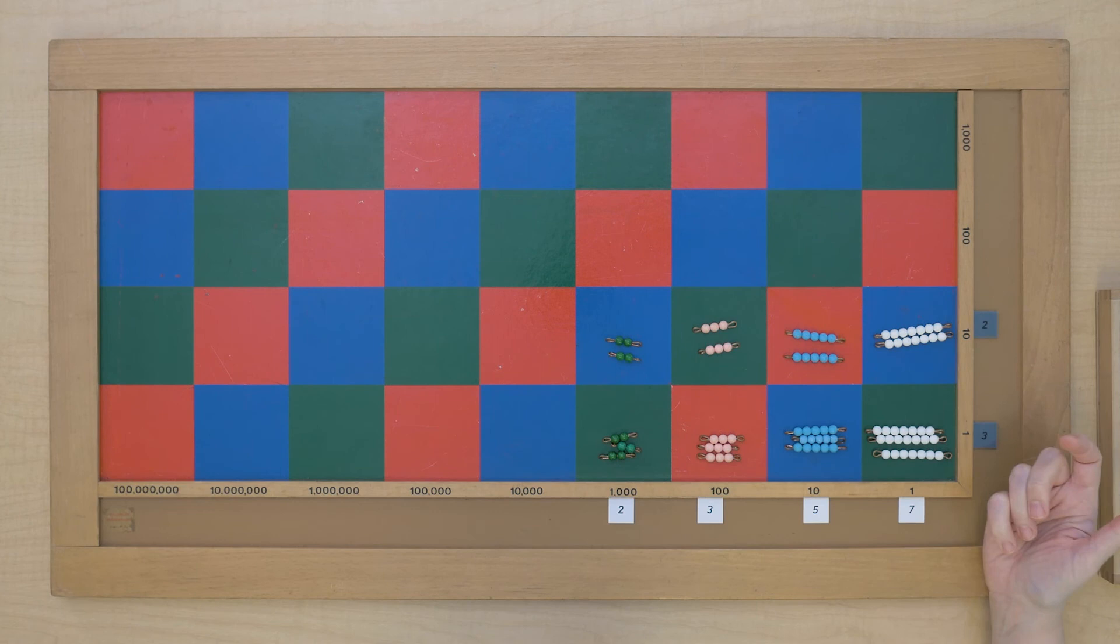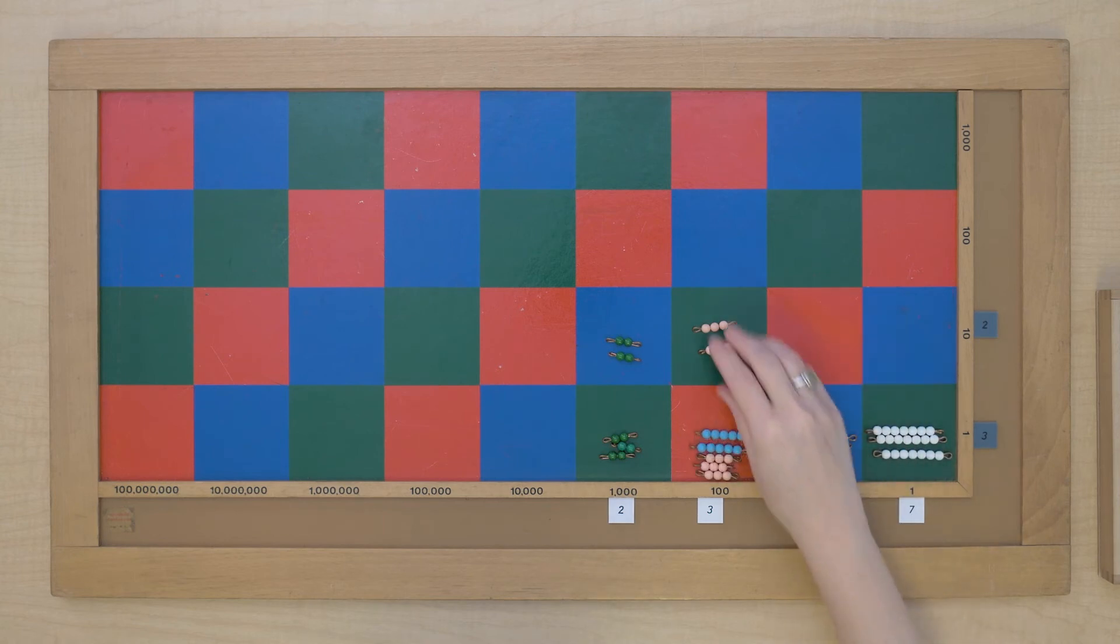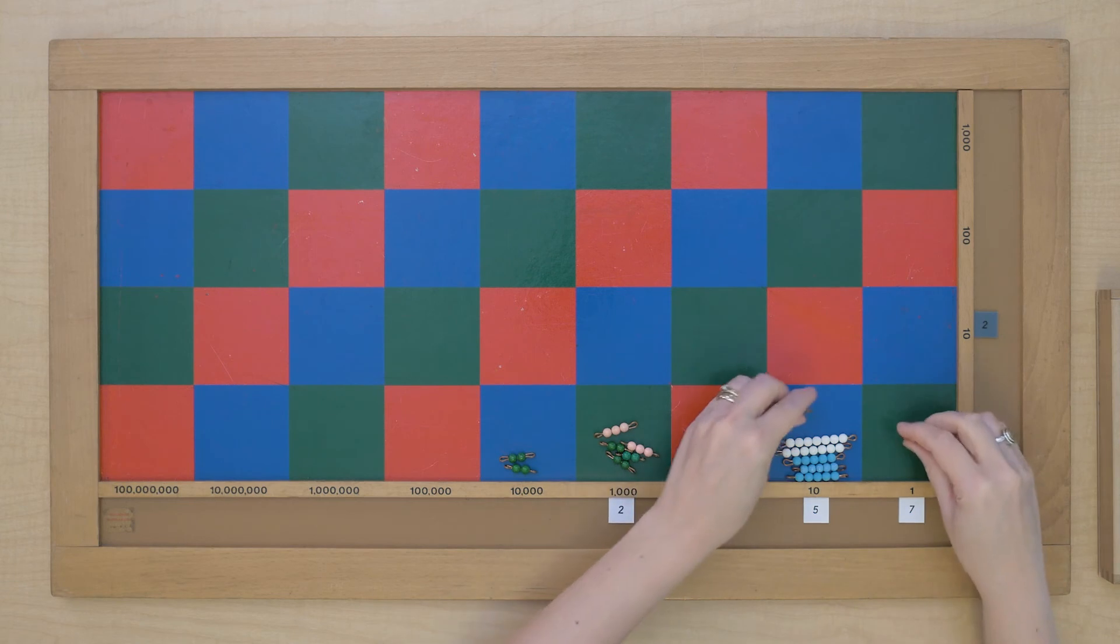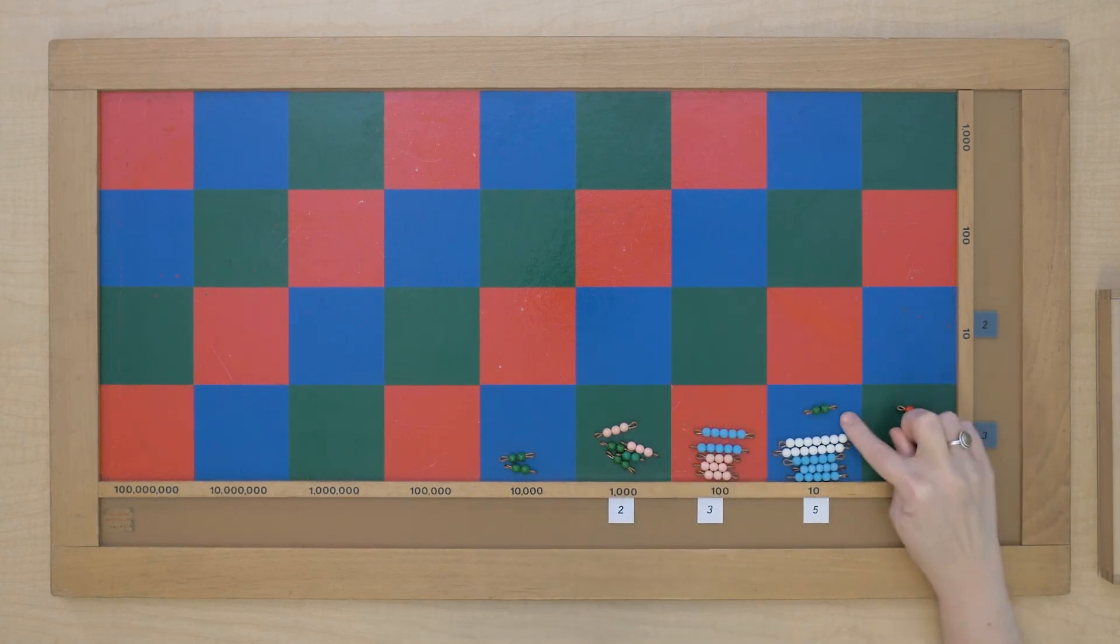But we can't read this yet. We need to slide everything to the bottom along the diagonal. And we still can't read. We have some exchanging that we need to do. So we have seven, 14, 21 units. So here's how I'm going to do that. 21 units means two tens and one unit. So we've got our 21 there.